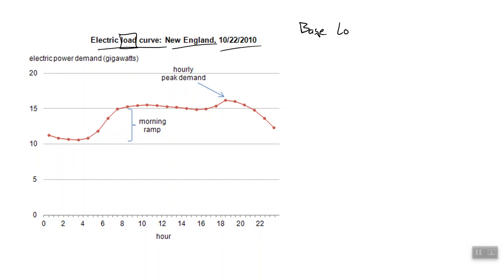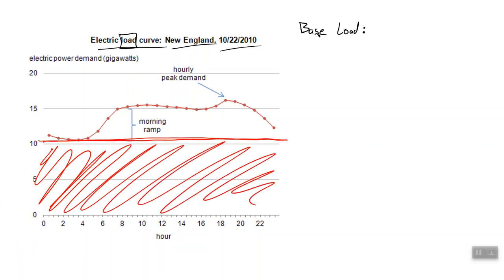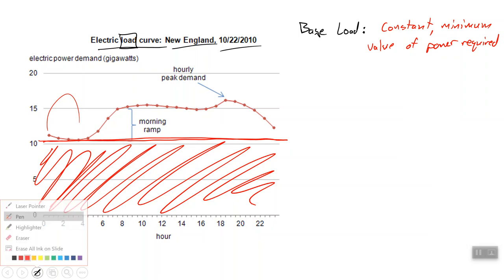So you see there is what we will call a base load, which I will draw with red. Here is our base load, which is a constant minimum value of power required. So at any time in the day, it's fairly certain the base load is going to happen unless there's something crazy like New Year's Eve. I'm sure the peak is greater or if everyone decides to go outside, then maybe the base load has gone down. I'm recording this during the COVID-19 crisis. I do not doubt that our base load has probably gone down a little bit.